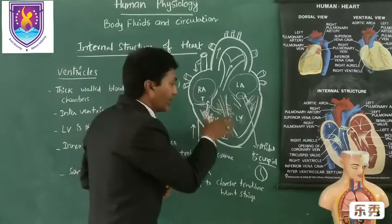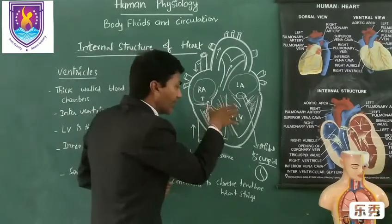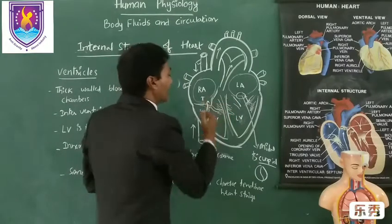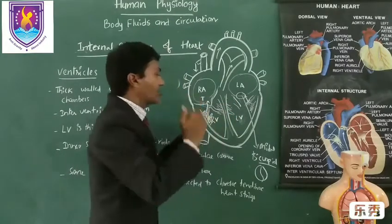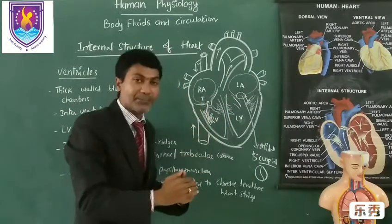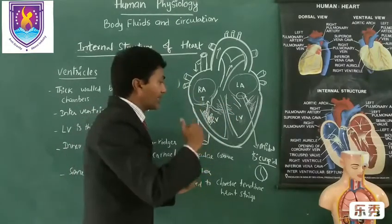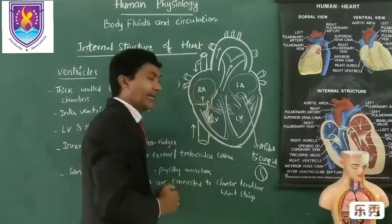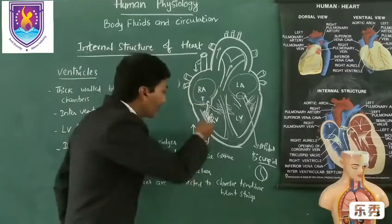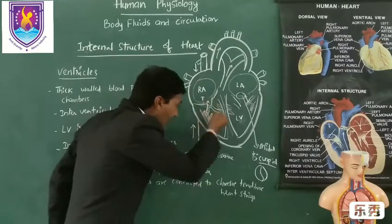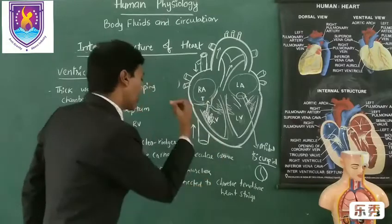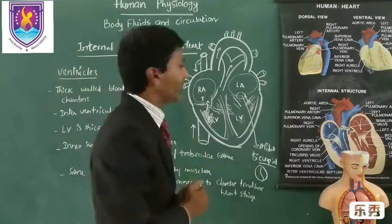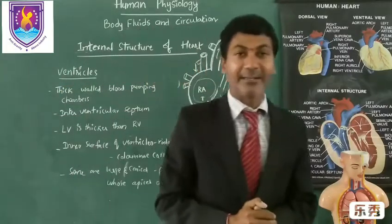When the ventricles undergo systolic pressure, the cusp has to close. But if the pressure is more, the cusp should not go inside the atria, because they are connected with chordae tendineae, or heartstrings. This is the key function of these structures regarding ventricles.